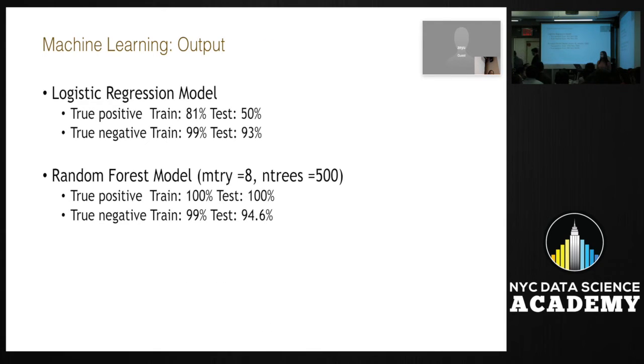So these are the outputs of my model. The true positive train for the logistic regression, the training set gave me 81%, true positive of 50% for the test set. And for the true negative, 99% and for the test 93%. The random forest model with eight variables selected at random with 500 trees gave me a true positive training set of 100 and the test set of 100. The true negative train set gave me 99 and the test of 94.